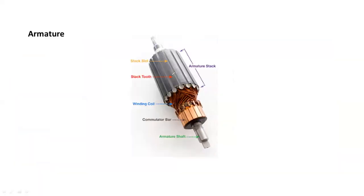Here you can see the structure of armature — it is made up of n number of slots. The entire segment is generally called as armature. It is made up in a laminated fashion to minimize eddy current loss. Eddy current loss should be as minimum as possible; otherwise efficiency comes down.